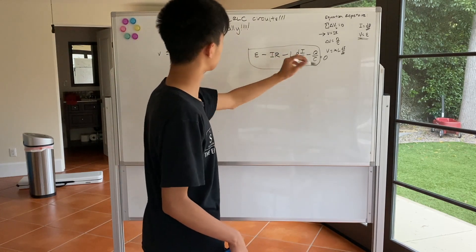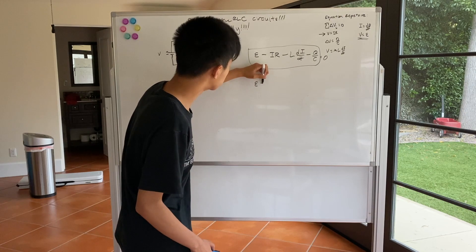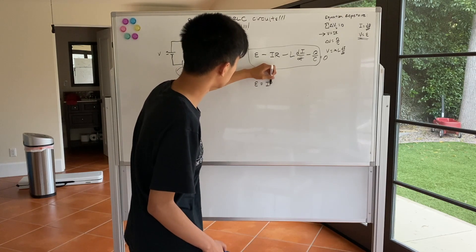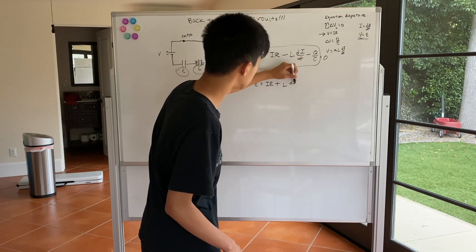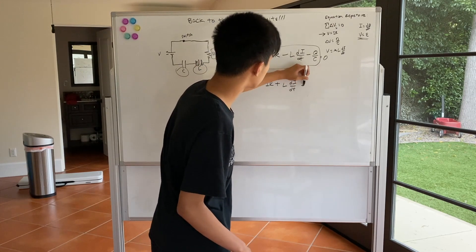Next, we can make it so this is epsilon equals to IR, or sorry, plus L di dt plus Q over C.